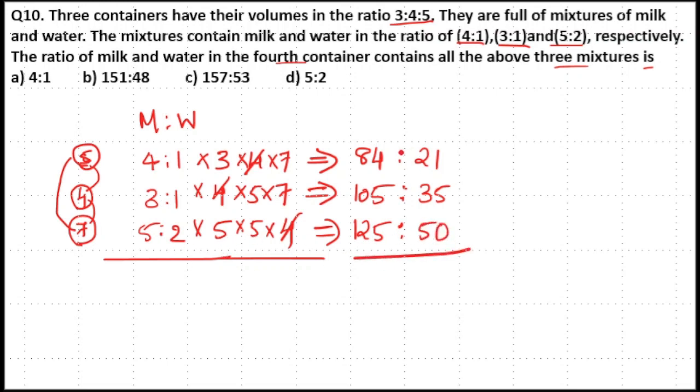So now total parts in all these three ratios are the same. You can add these ratios together to obtain the final mixture ratio. Adding milk: 84+105+125=314. Adding water: 21+35+50=106. This gives 314:106.